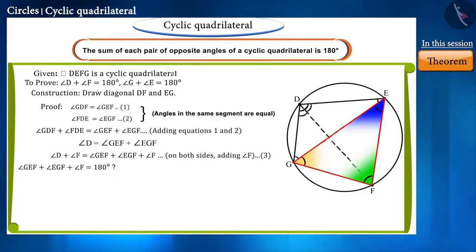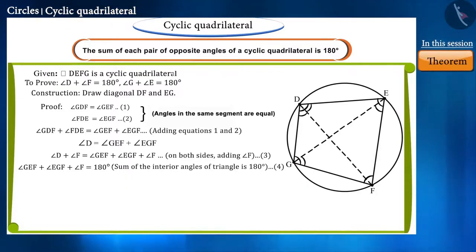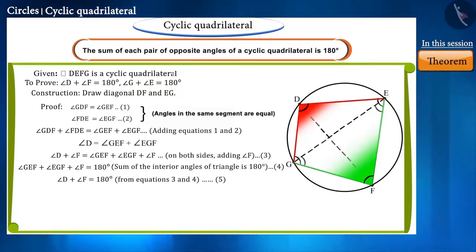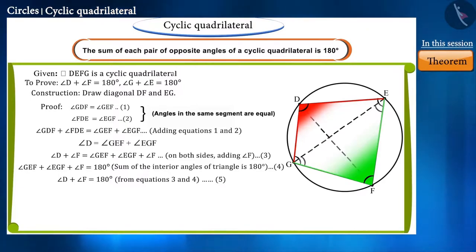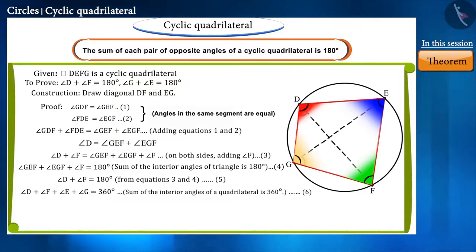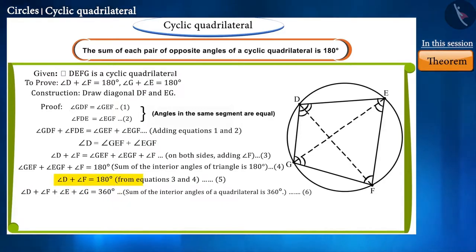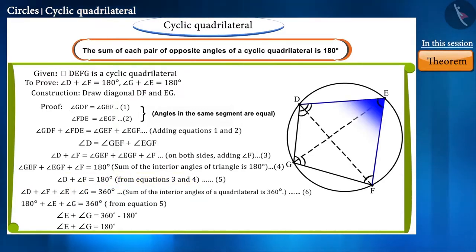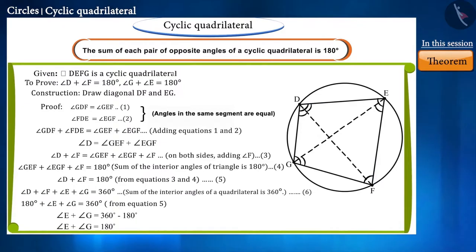These three are the angles of triangle GFE, and we know that the sum of three angles of a triangle is 180 degrees. Therefore, the sum of angle D and angle F is 180 degrees. Both angle D and angle F are opposite angles in this cyclic quadrilateral, so we have proved this pair of opposite angles is supplementary. Since the sum of all four angles of a quadrilateral is 360 degrees, we can also derive that angle E plus angle G equals 180 degrees.